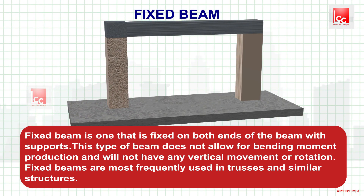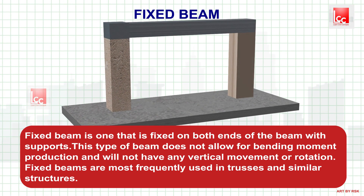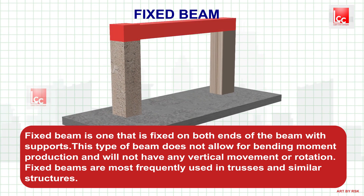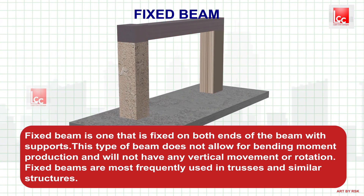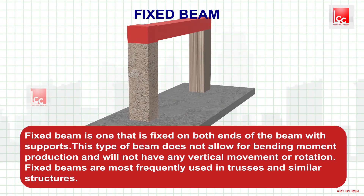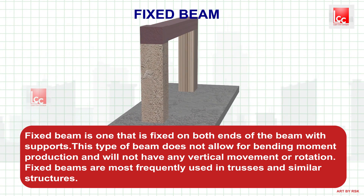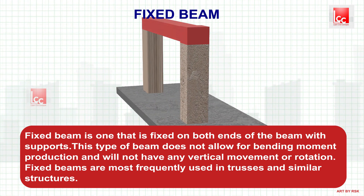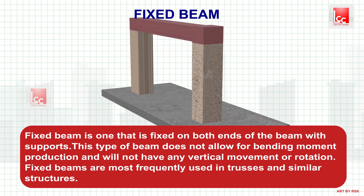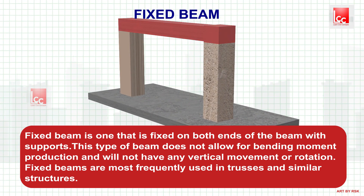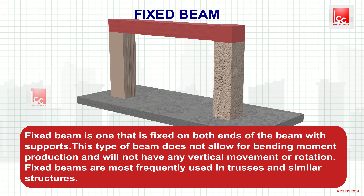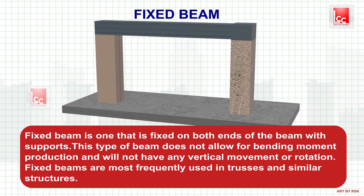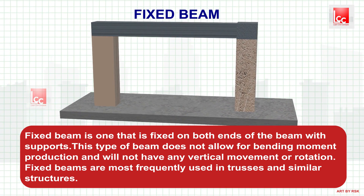Fixed beam. A fixed beam is one that is fixed on both ends with supports. This type of beam does not allow for rotation and will not have any vertical movement or rotation at the supports. Fixed beams are most frequently used in trusses or similar structures.